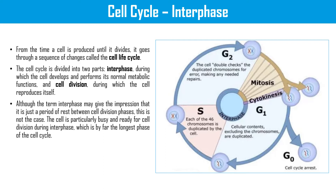In G1, cellular contents excluding the chromosomes are duplicated. In S phase, each of the 46 chromosomes is duplicated by the cell. In G2 phase, the cell double-checks the duplicated chromosomes for errors, making any needed repairs. Then it goes to the mitosis phase. Interphase is more accurately referred to as a metabolic phase.